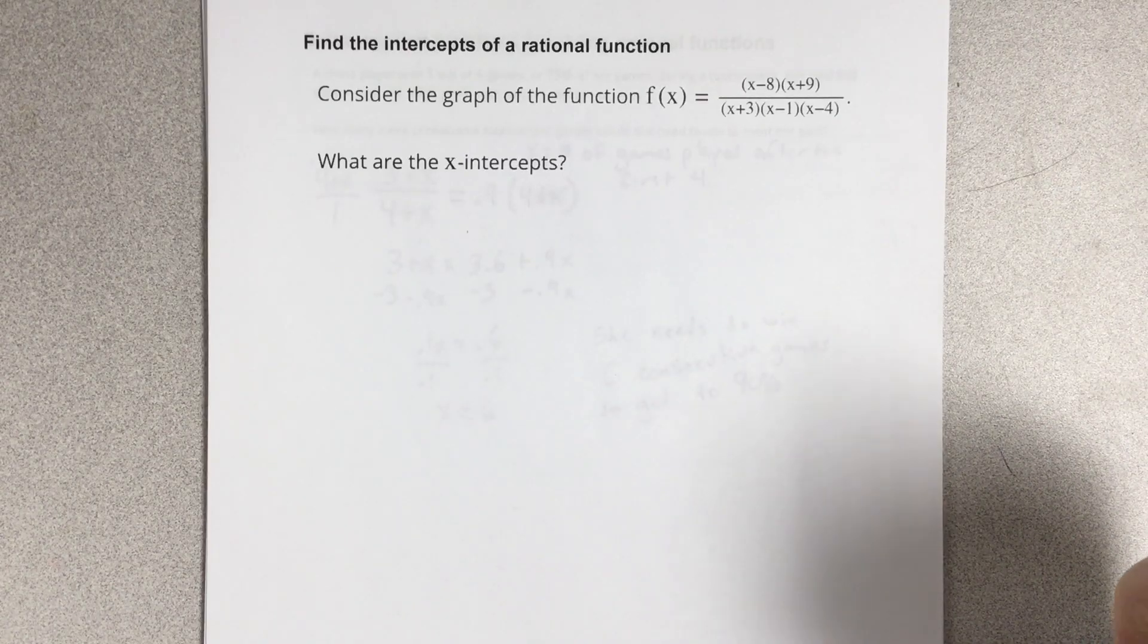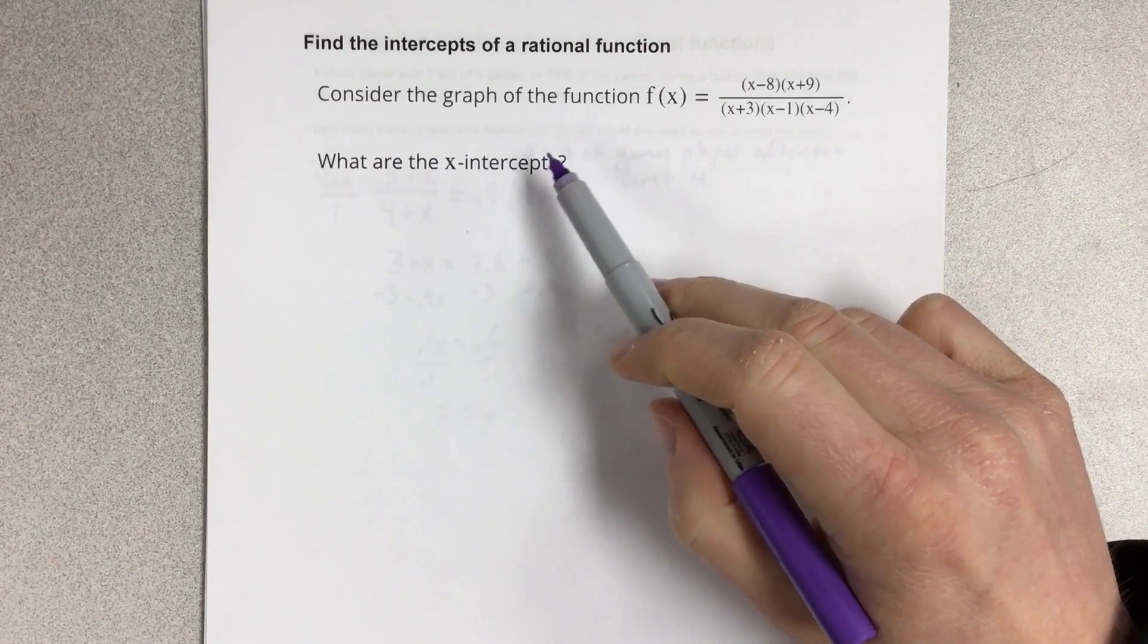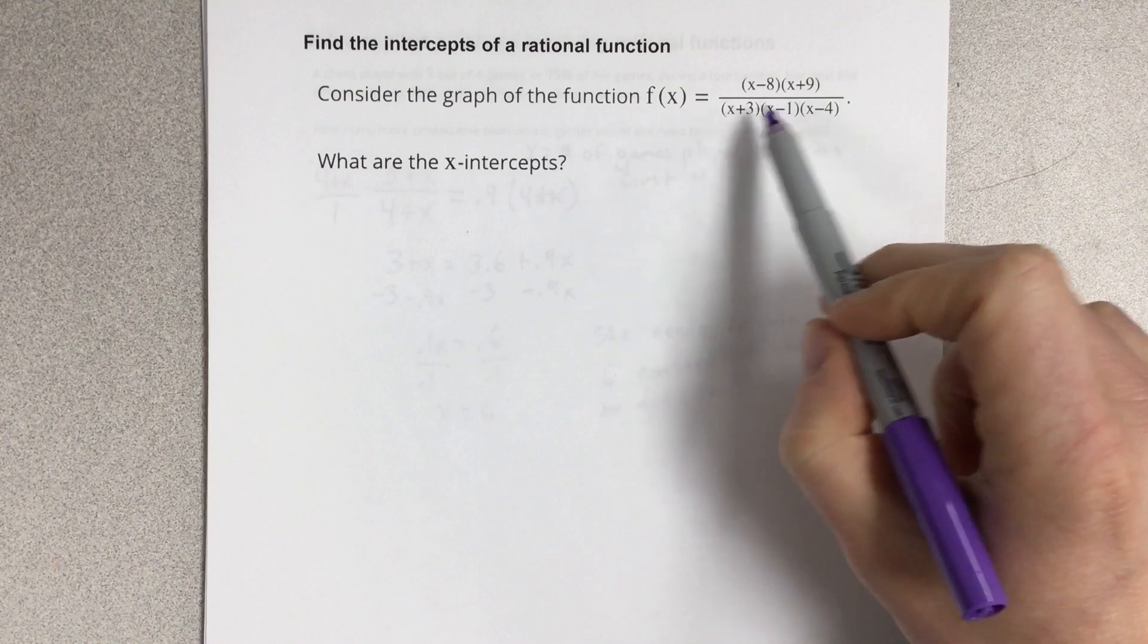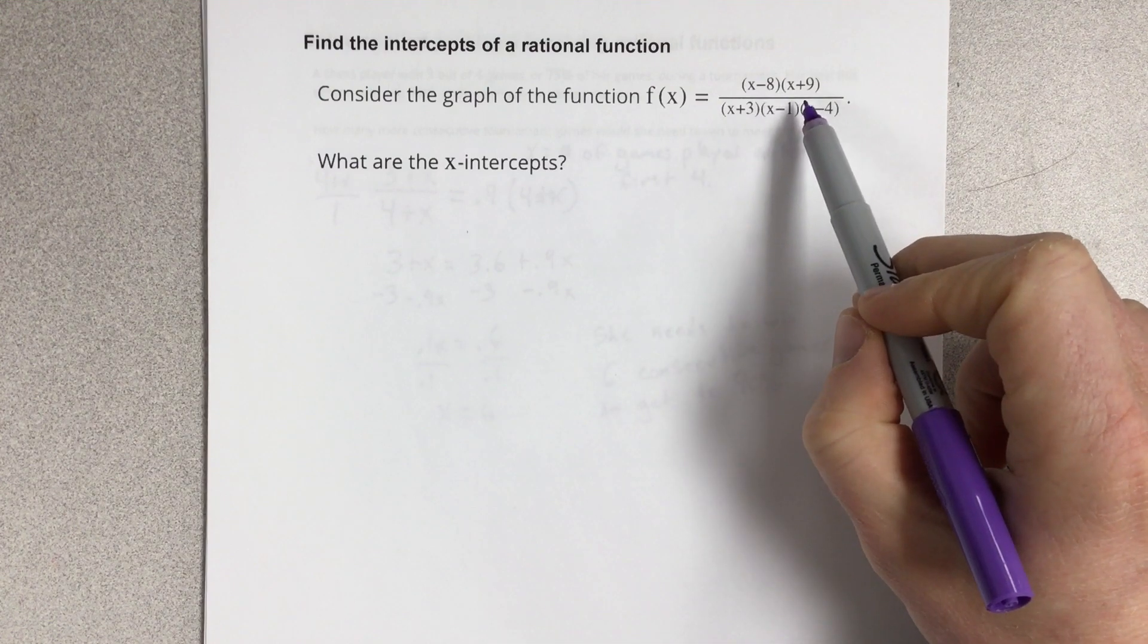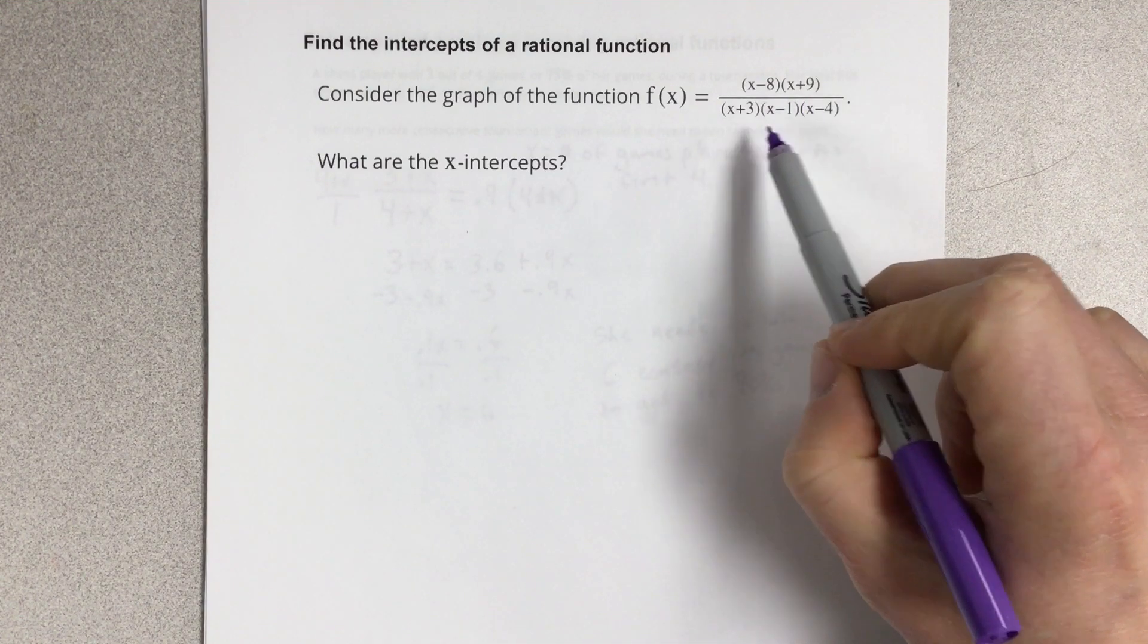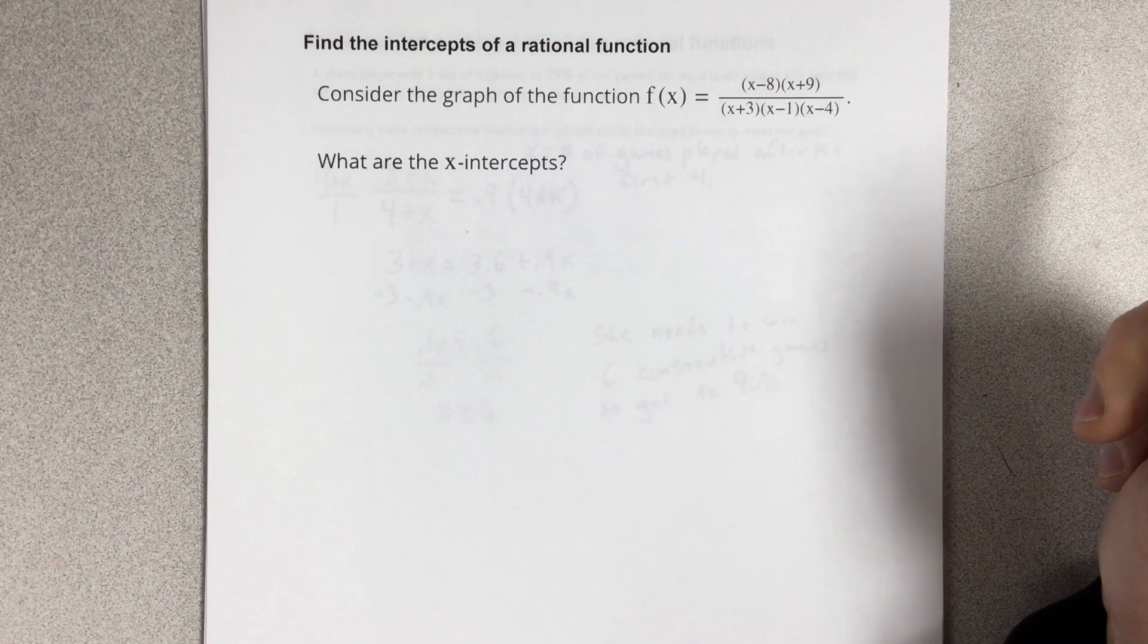In this video, we're going to find the intercepts of a rational function. Consider the graph of the function f(x) equals (x - 8)(x + 9) divided by (x + 3)(x - 1)(x - 4). What are the x-intercepts?